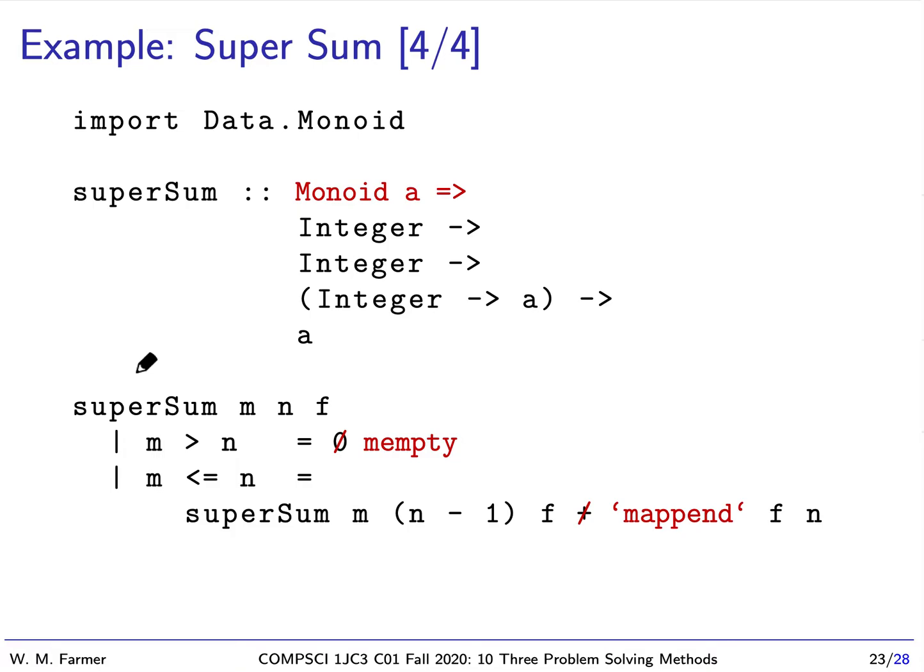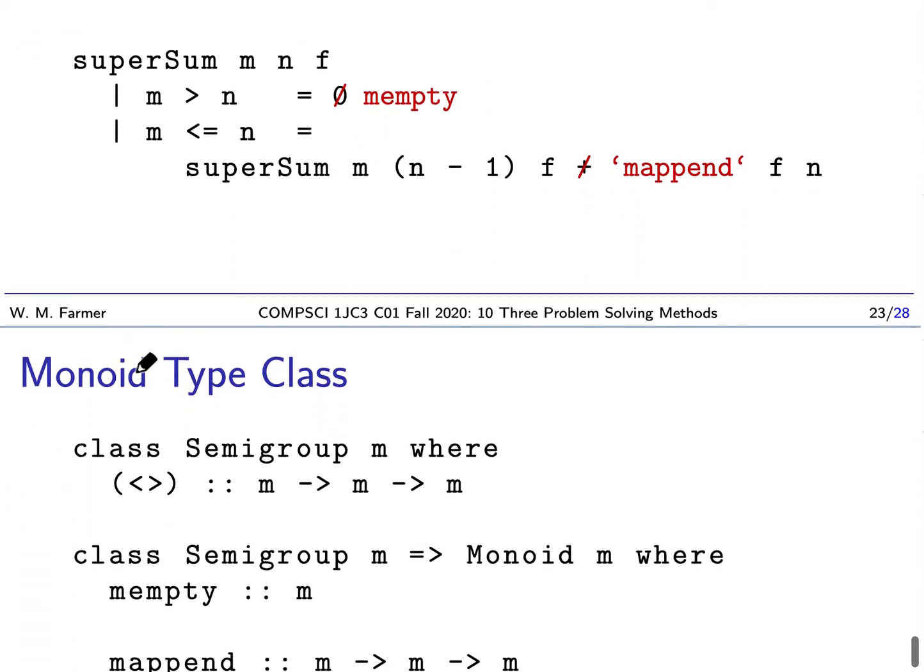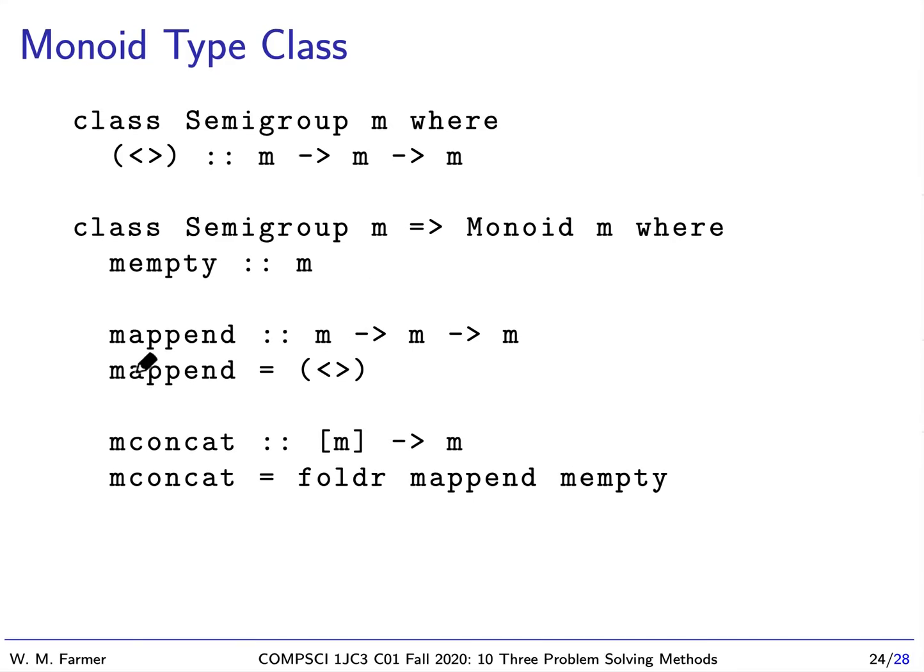So what is a monoid type? Well, it's built starting with a semi-group type and a semi-group type is just a binary operation. And then a monoid type is a semi-group type, but it also has m empty and m append and m concatenate. So m concatenate basically concatenates everything in a list together. That's defined using a fold. So that's what a monoid is. It's very similar to the theory. Remember, I had a theory of monoids. This looks like a theory of monoids, but the axioms are implicit. The axioms that we have for a monoid said that m append would be associative and m empty is the identity element with respect to m append.